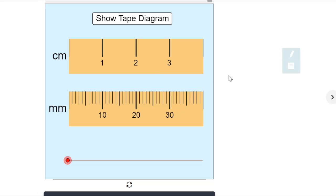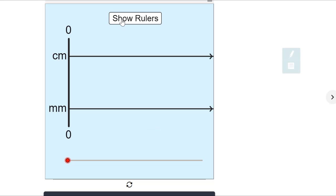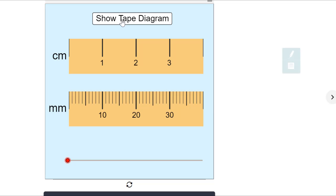So here we are in the CK12 diagram. I have my centimeter ruler up here and my millimeter ruler down here. And I can also go over to my tape diagram. Let's start with our rulers.